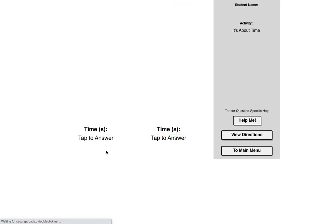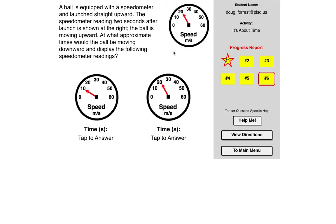Now there's one of these which is kind of weird, and I was hoping I'd get to this one. We'll see if I get to it or not. So the ball is equipped with speedometer, launch straight upward. Speedometer reading two seconds after the launch is shown to the right, the ball is moving upward. So again, two seconds before, it would have been moving upward faster by 20 meters per second.